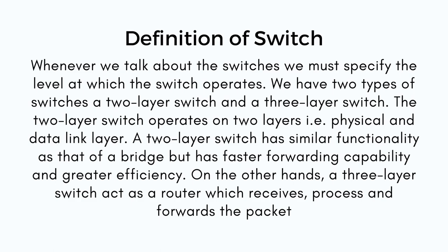Definition of switch. Whenever we talk about switches, we must specify the level at which the switch operates. We have two types of switches: the two-layer switch and the three-layer switch. The two-layer switch operates on two layers — physical and data link layer — and has similar functionality as that of a bridge but with faster forwarding capability and greater efficiency. On the other hand, a three-layer switch acts as a router which receives, crosses, and forwards the packet.